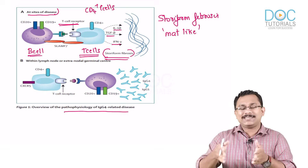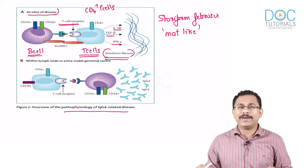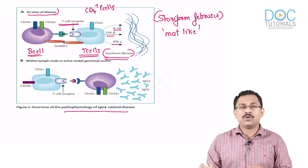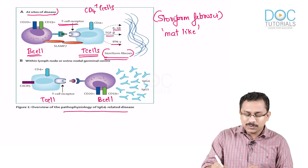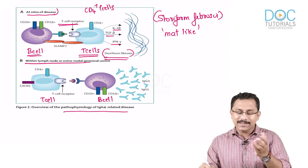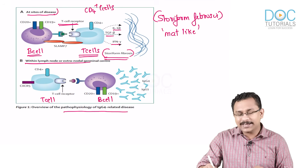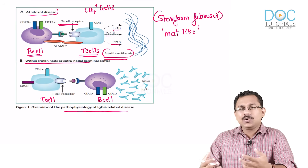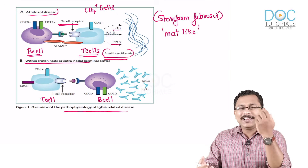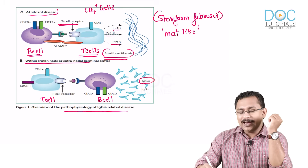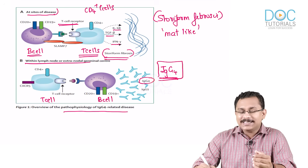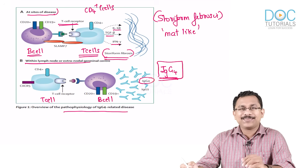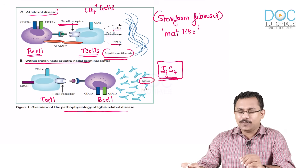Storiform means matte-like — fibrosis in a matte-like pattern. T cells and B cells can also interact within lymph nodes and extranodal germinal centers, resulting in an increase in plasma cell population and release of antibodies, especially of the IgG4 subtype. Immunoglobulin G has subtypes 1, 2, 3, and 4, and it is predominantly an IgG4 response that occurs.